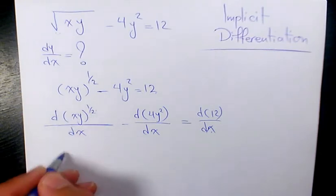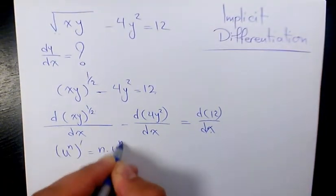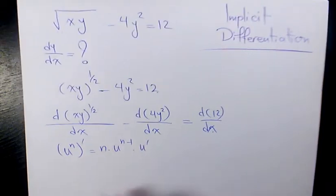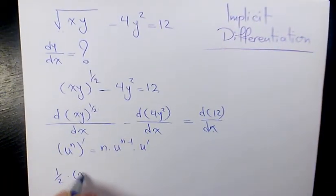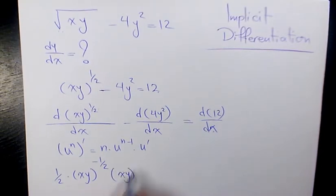So this part, you know, derivative of u to the power of n is going to be n times u to the power of n minus 1 times u prime. So that's going to be one half times xy to the power of negative one half, because one half minus 1 is going to be negative one half, times the derivative of xy.